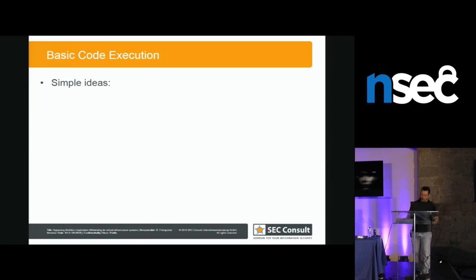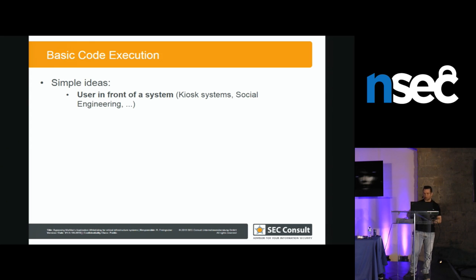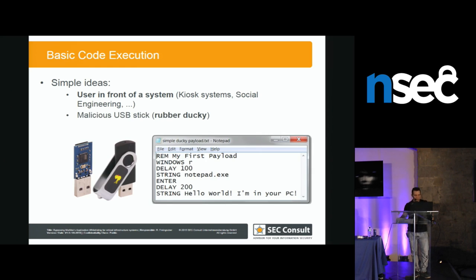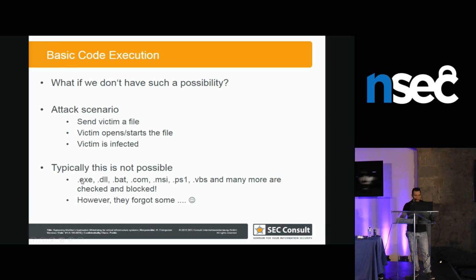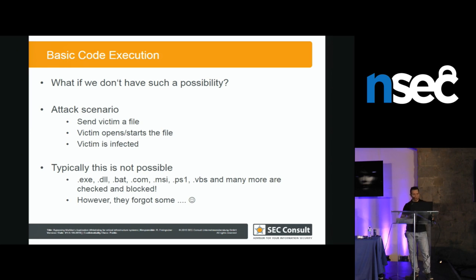For basic code execution: the very simplest idea — if I'm sitting in front of the system — is to just type PowerShell. This works for kiosk systems or social engineering audits with physical access. The same idea works with malicious USB sticks — like the Rubber Ducky, which is a USB stick that identifies as a keyboard and types whatever you configure, including a PowerShell payload. But the typical social engineering attack is sending a victim a file they click on. The problem is they check many extensions like Excel files and MSI files — but they use a blacklist approach, and you always forget something. In this case they forgot HTA files — HTML applications where you can use VBScript to get the WScript COM object and execute local applications.